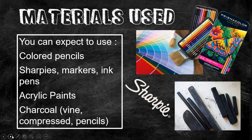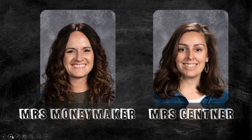We're going to use many different materials in intro to 2D art. You can expect to use some of the following: colored pencils and paint, Sharpie, and charcoals. You don't have to worry about getting any of this stuff or running out and buying these. Your art teachers already have these for you — they will give you everything you need to complete each project in class.